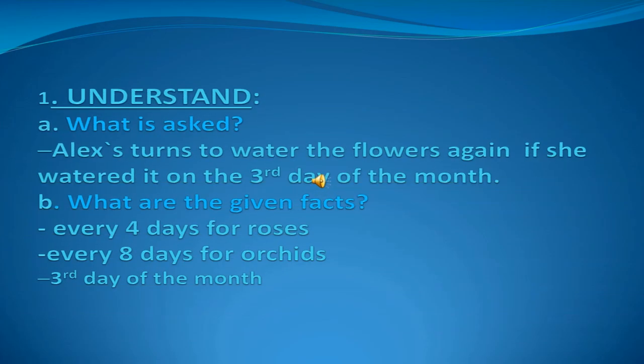Now we are going to use the step-by-step method in solving the word problem. First is: Understand. We need to understand the problem in order to know what is asked. The answer is: when is Alex's turn to water the flowers again, given that she watered them on the 3rd day of the month. The given facts are: first, every 4 days for roses; second, every 8 days for orchids; and the 3rd day of the month.